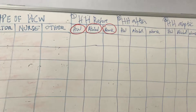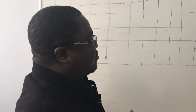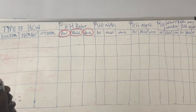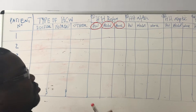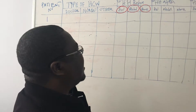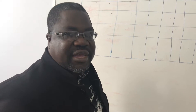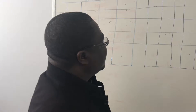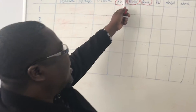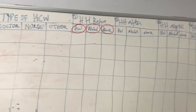Remember, it depends on what you decide to measure — whether you are going to measure all of the indications, or you are going to choose two, three, or one specific indication. But you have to specify which one you are measuring. In this example, you measure hand hygiene before and hand hygiene after patient contact.